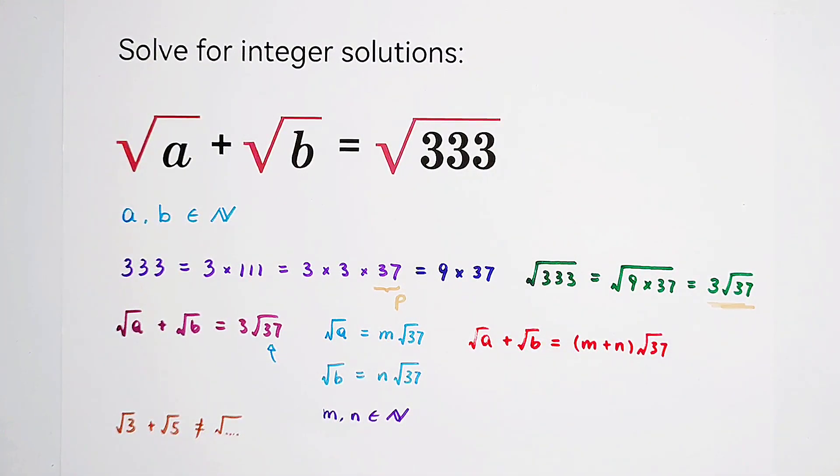If we compare these two right-hand sides, of course, we can get easily that m plus n should be equal to 3.